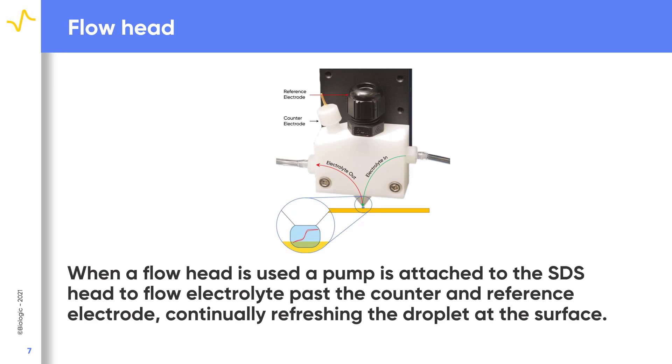Using an SDC flow head allows the droplet to be continually refreshed throughout the experiment. To do this, the head is attached to a pump which flows electrolyte into the head, past the reference and counter electrode, and then flows it out of the head.